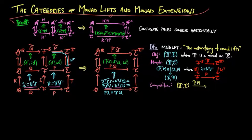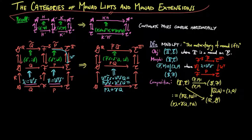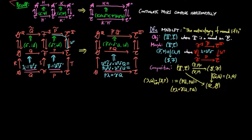Then we have two equivalent descriptions of composition, where p-tilda-p, which is equivalent to gamma-p, followed by q-tilda-q, which is equivalent to lambda-q, is p-tilda-q-tilda-pq, which, as we have shown on the left, is equal to p-lambda-gamma-q-pq. Then since horizontal composition of commuting squares is associative, and the identity functors act as the identity morphisms for this category, we see that our definition gives a well-defined categorical structure on monad lifts.